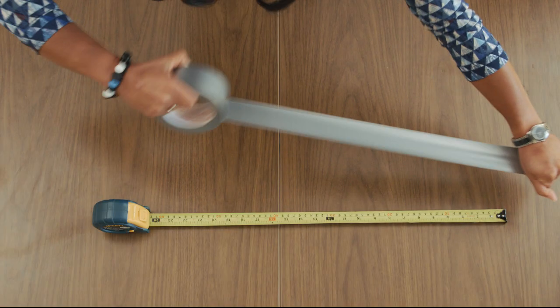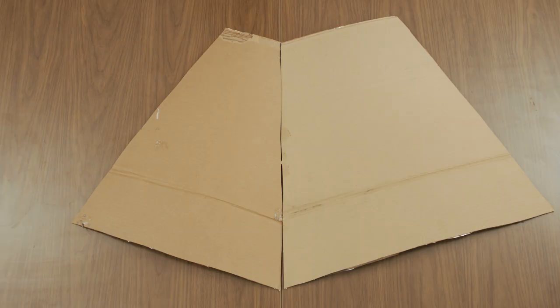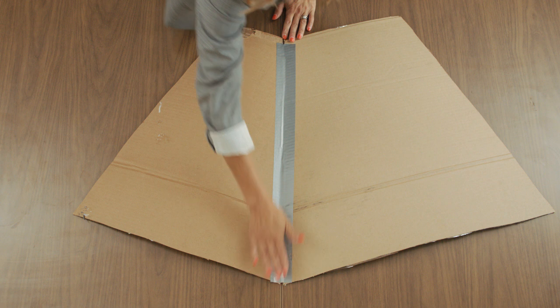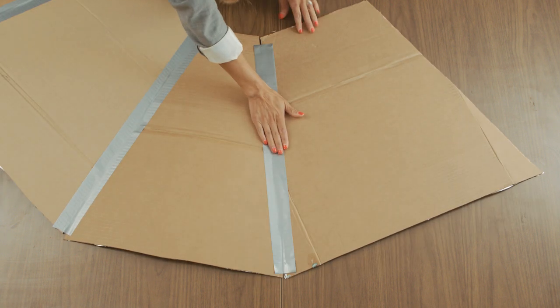Cut four pieces of duct tape 60 centimeters long and set them aside. Arrange the segments foil side down, with wide sections alternating with narrow ones. Position one of your strips of duct tape over the joint between the panels. Join the third and fourth panels in the same way.